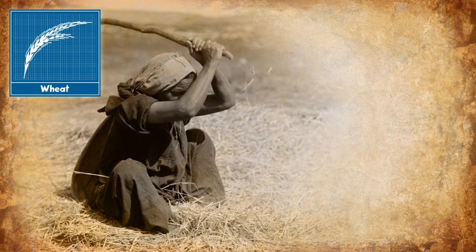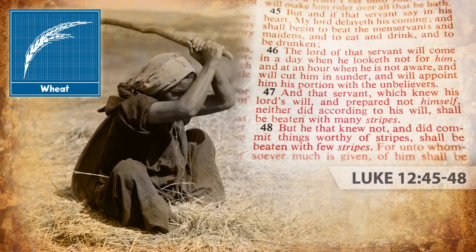This is a picture Christ paints in scripture of his servants who are not responsive to his Spirit's leading — they don't have an ear to hear. They are his servants, his offspring, but they're not as responsive; they have to be threshed. He gives them a warning in Luke 12:45-48: 'But if that servant say in his heart, My Lord delayeth his coming, and shall begin to beat the menservants and maidens, and to eat and drink and to be drunken — the Lord of that servant will come in a day when he looketh not for him, and at an hour when he is not aware, and will cut him in sunder, and will appoint him his portion with the unbelievers. And that servant which knew his Lord's will, and prepared not himself, neither did according to his will, shall be beaten with many stripes. But he that knew not, and did commit things worthy of stripes, shall be beaten with few stripes.'